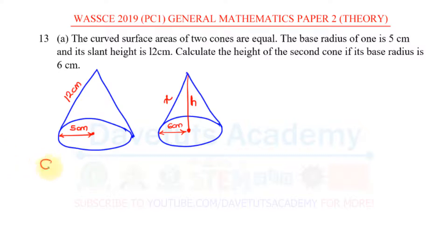The curved surface area of cone is given as... the two cones that we are given, we can say if this is let's say this is A and this is B.